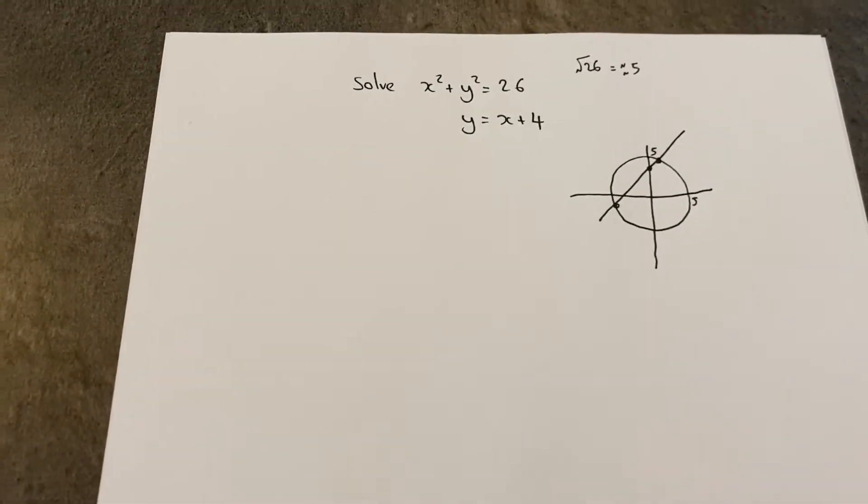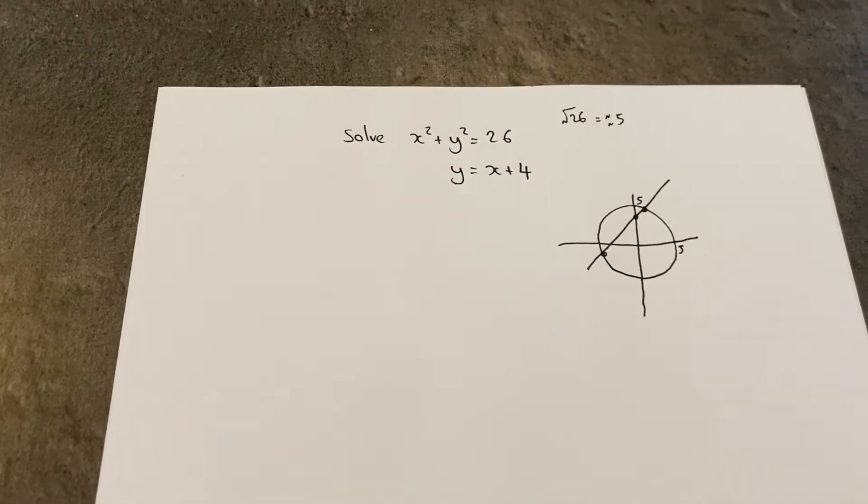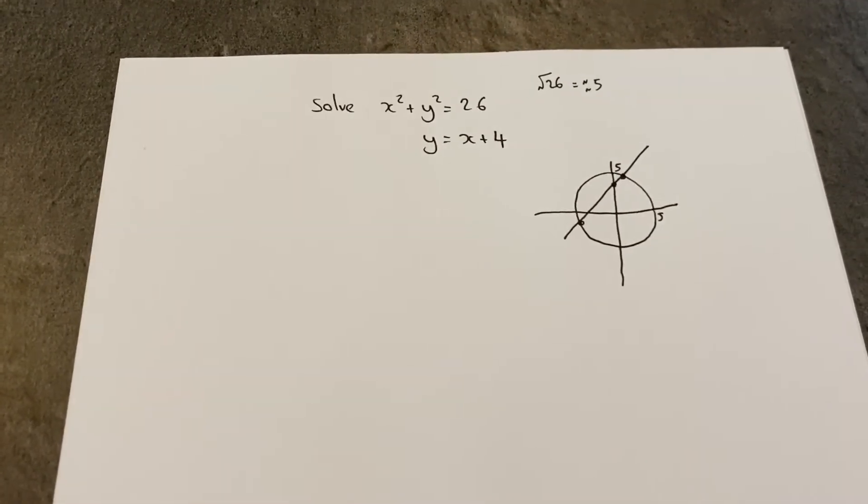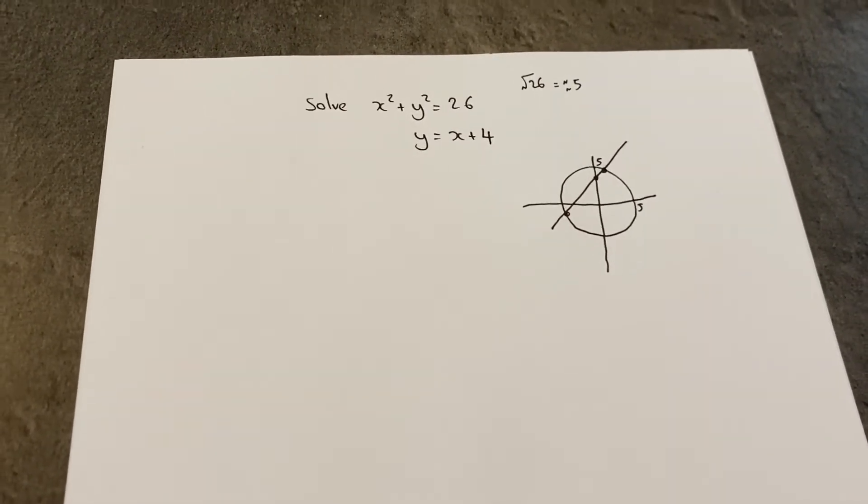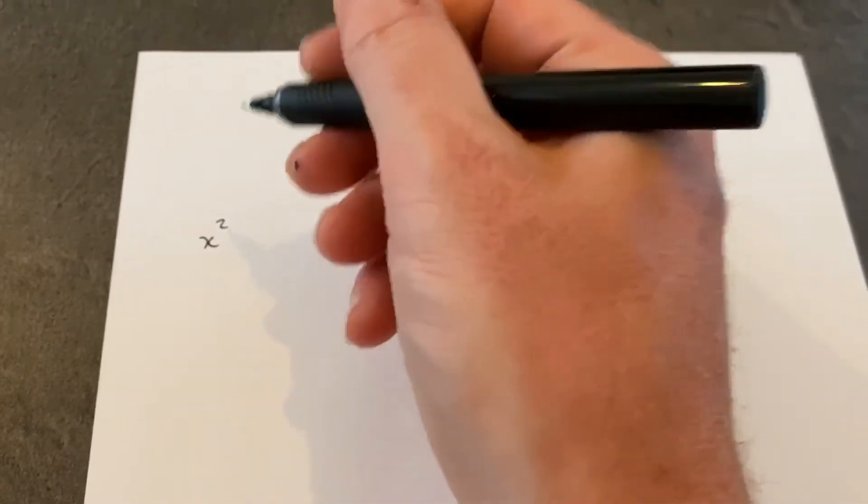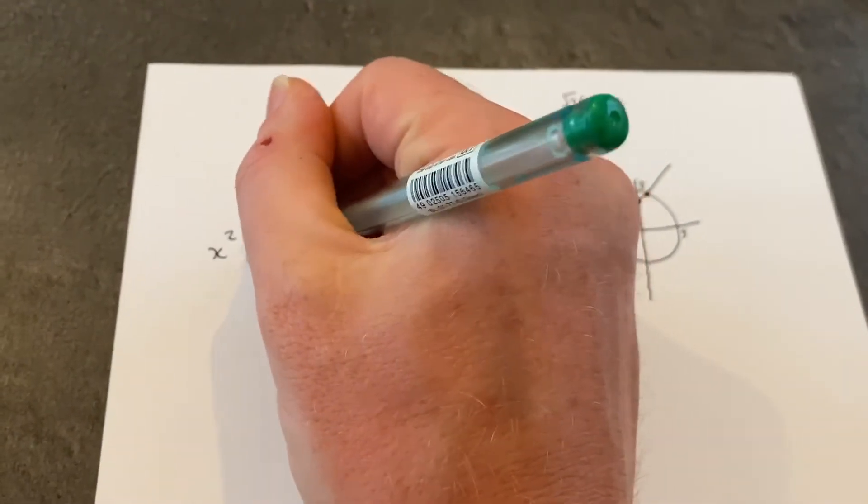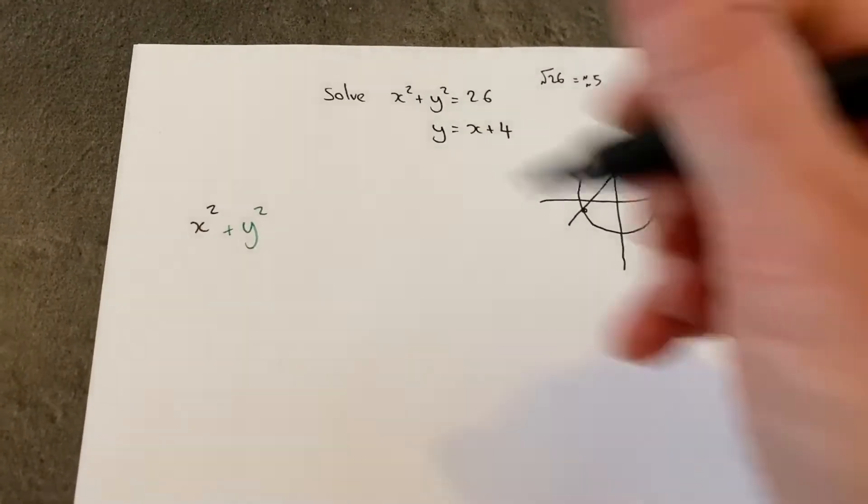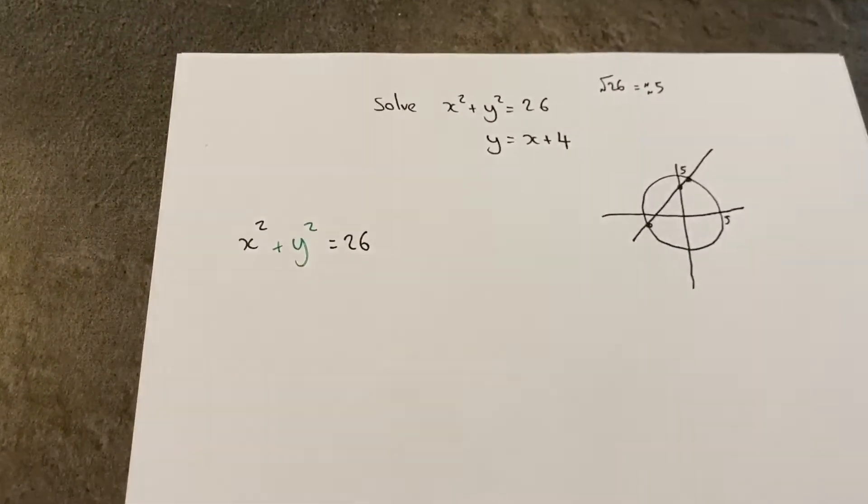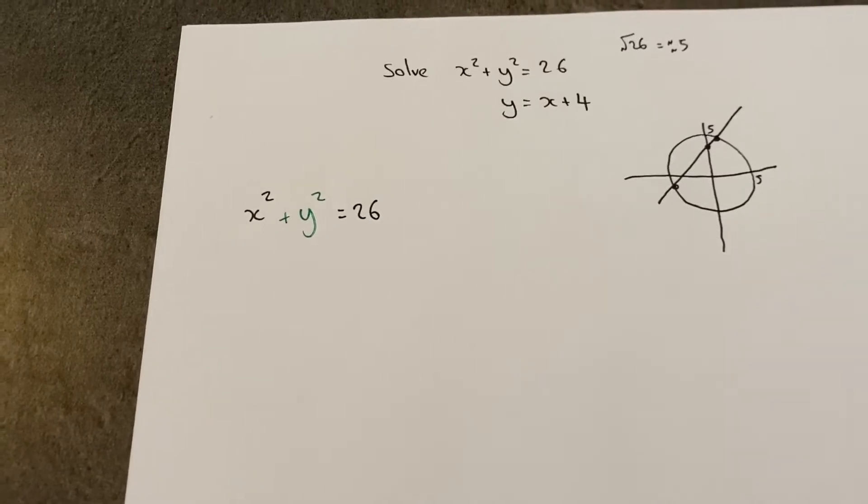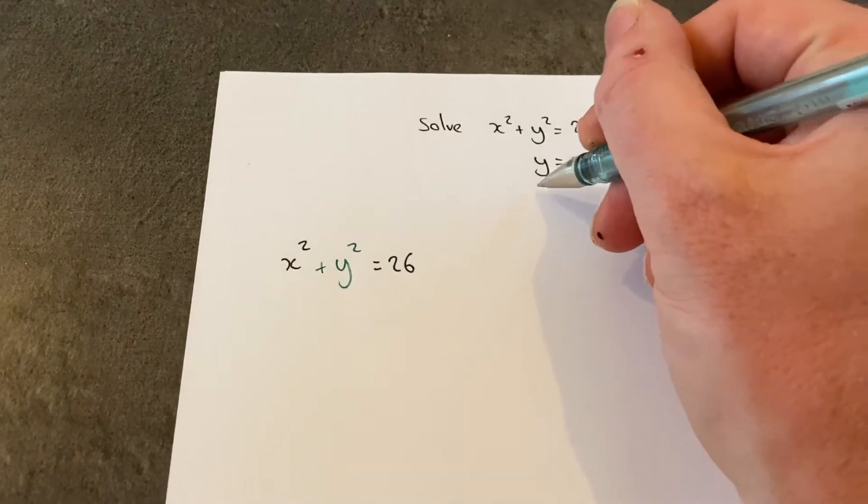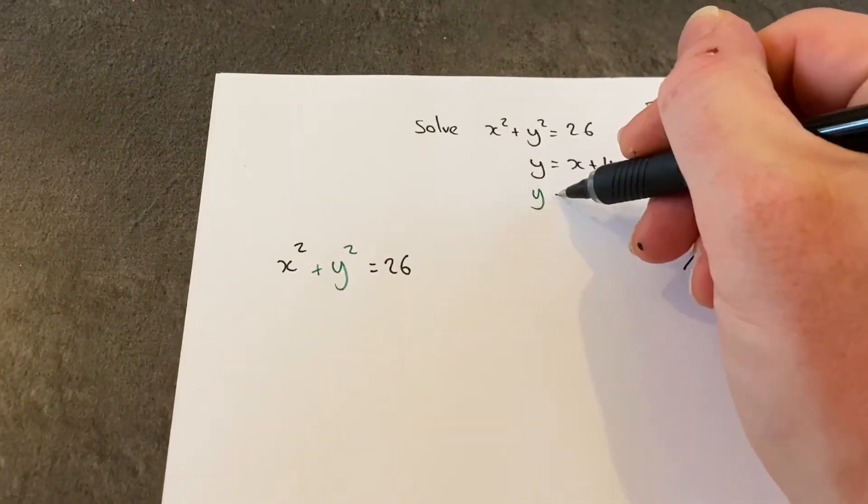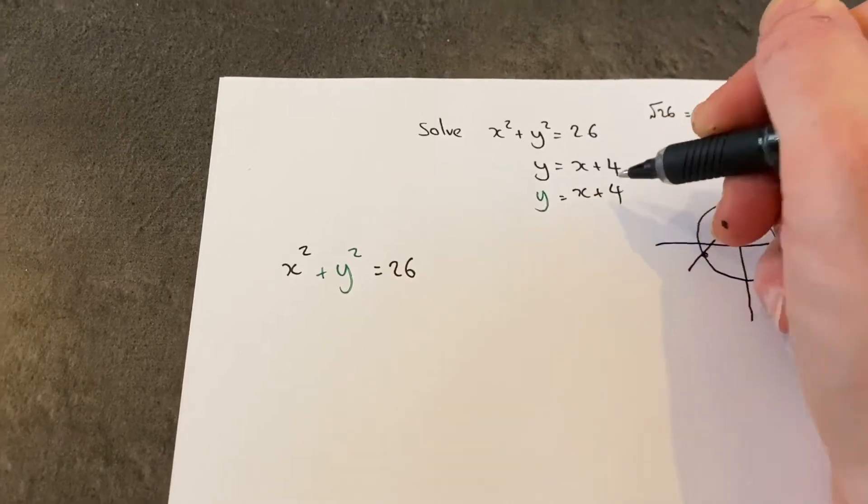To do this, we can use simultaneous equations because both equations have x and y in them. Here's how we can solve it. I'm going to write down the first equation again using two colors: x squared plus y squared equals 26. We've got an x and a y in that equation, but we also know that y is equal to x plus 4.